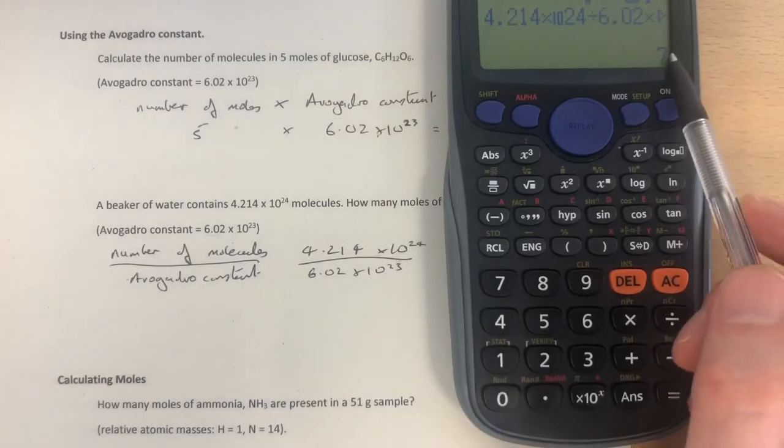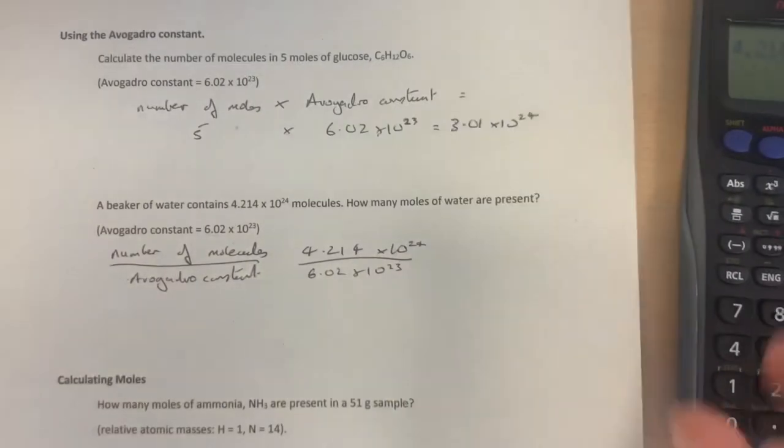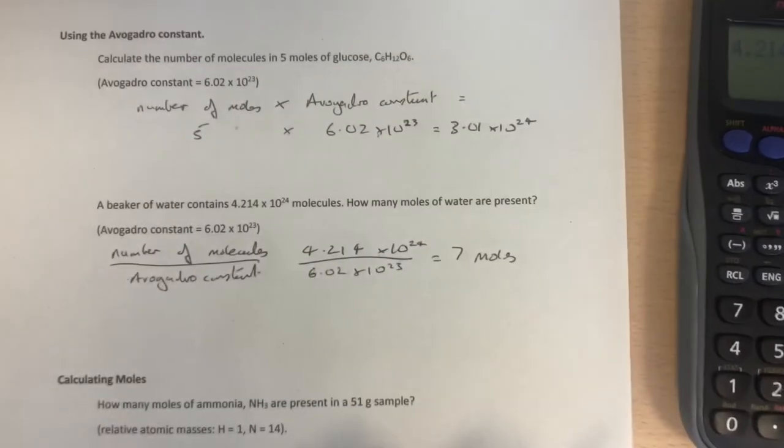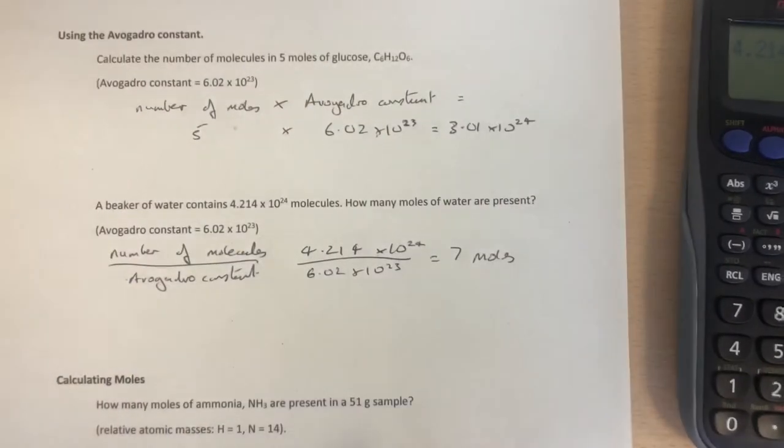And we've got the answer, 7, 7 moles. Now it happens to be a nice round number, sometimes they are, sometimes they're not. 7 moles. So that's the calculation answer to this question.